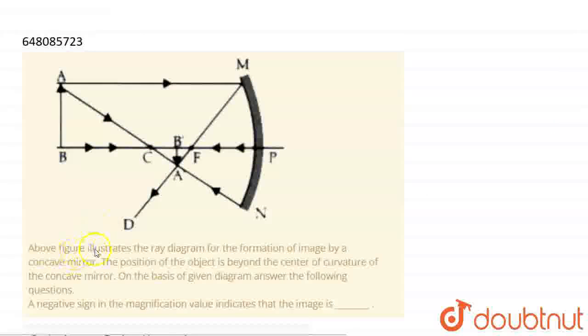Question is given. The above figure illustrates the ray diagram for the formation of the image by a concave mirror. The position of the object is beyond the center of curvature of the concave mirror. On the basis of the given diagram, answer the following questions.